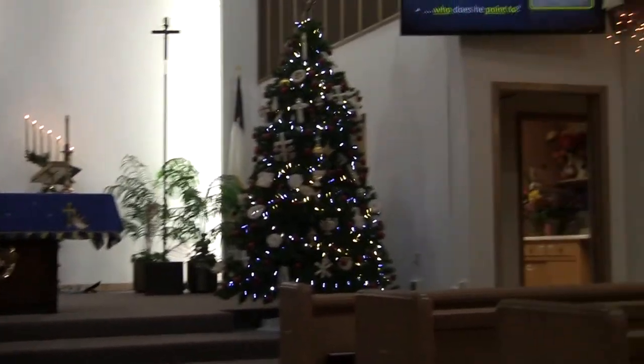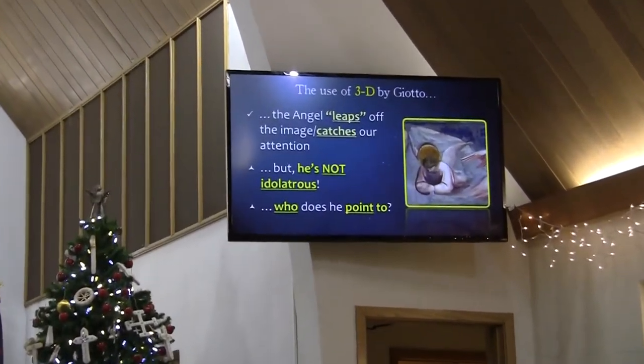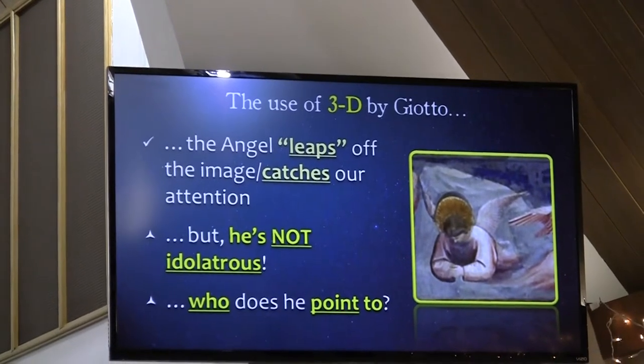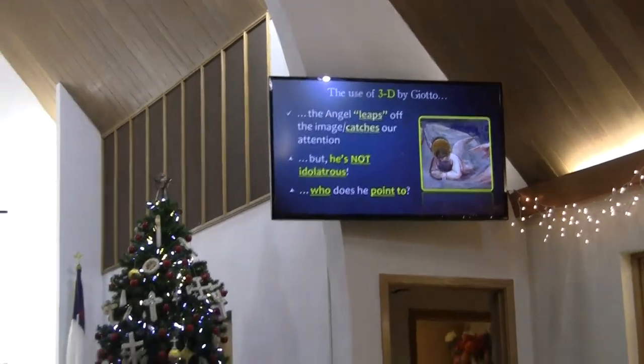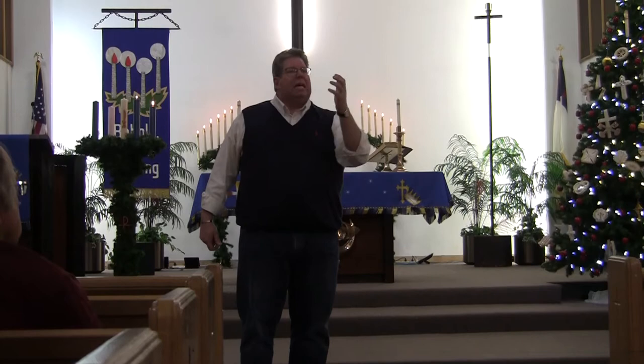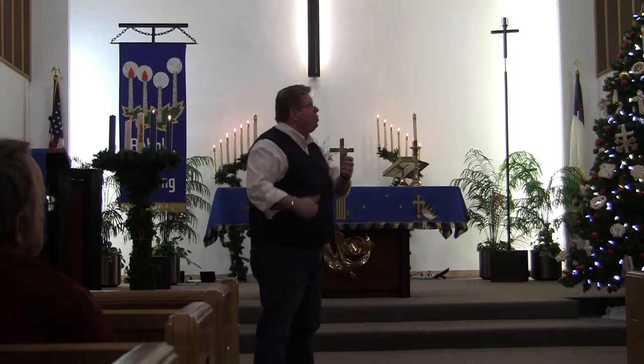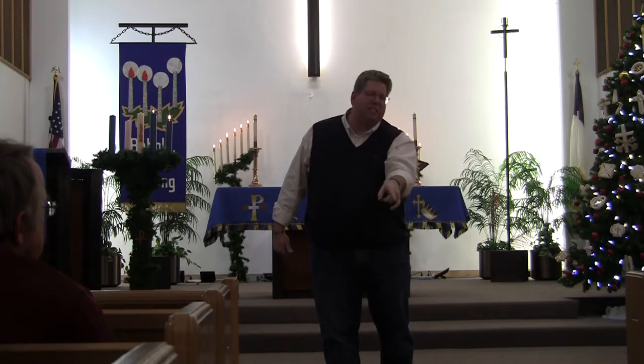The use of 3D by Giotto — this angel that leaps off the image and catches our attention — is significant. The concern in Byzantine art was that if you had anything 3D, the danger was you could turn that into an idol you would worship. What Giotto does by using 3D and having the angel leap off the image — does that 3D image cause us to worship something else? The answer is patently no. Because the angel is not looking out at us — the angel is not looking in any direction except at the baby and at Mary. So by jumping off the page, we're invited to participate in this image, and our gaze follows where the angel's goes — down to the baby and to Mary.